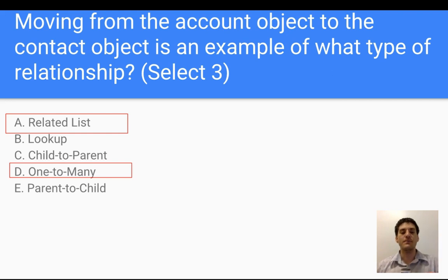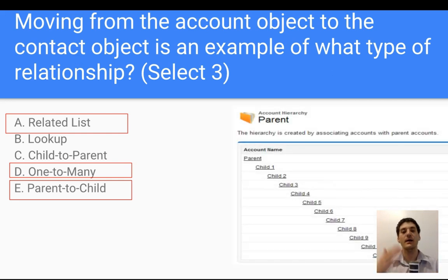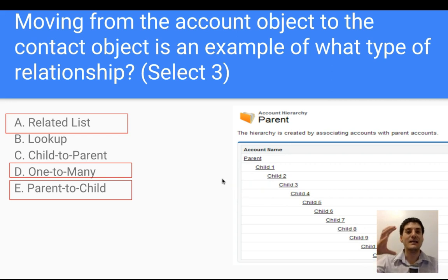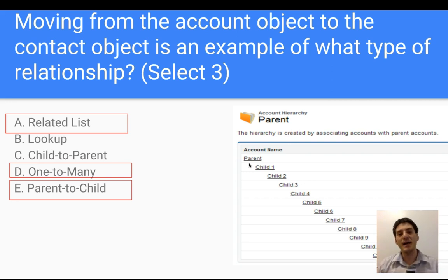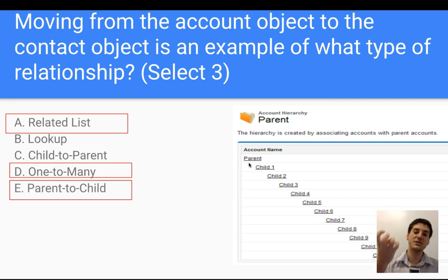One account can have many contacts, demonstrating a one-to-many, parent-to-child relationship. There's actually a limit to the number of children every parent can have — it isn't unlimited. When thinking about these relationships, what's important is understanding what the parent is and the relationship between the parent and the child. Think of it like a marketing campaign: you may have an overriding parent campaign with sub-campaigns as children — that's an example of a hierarchy.